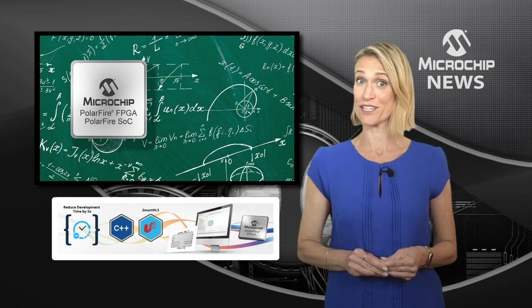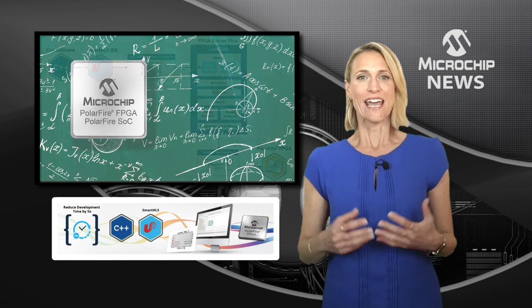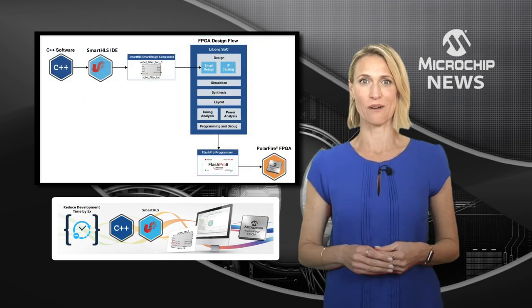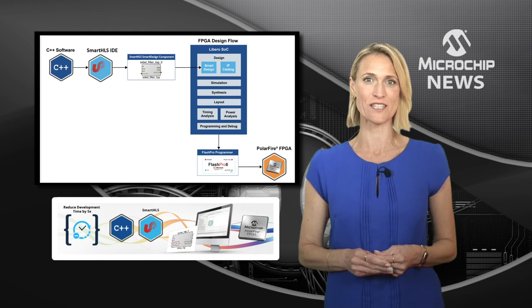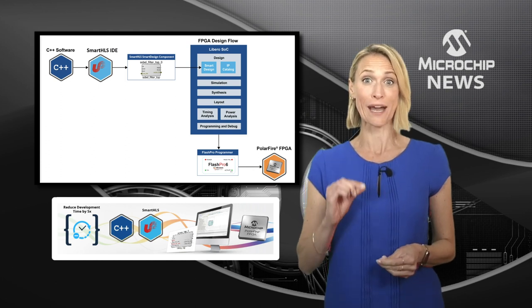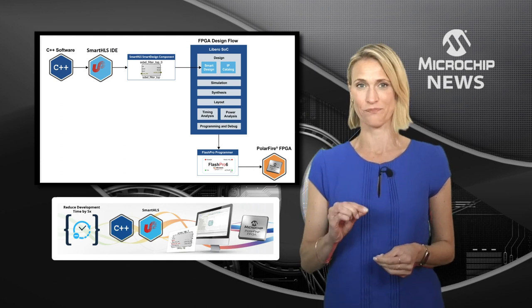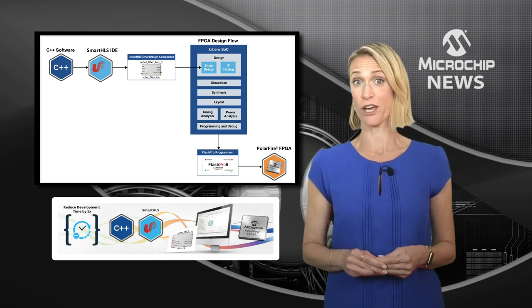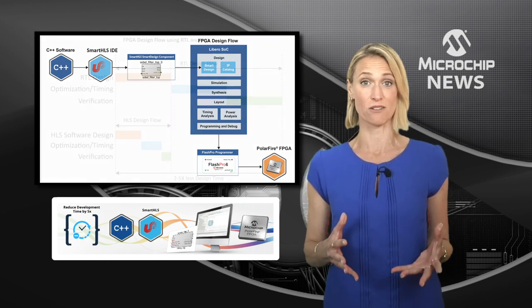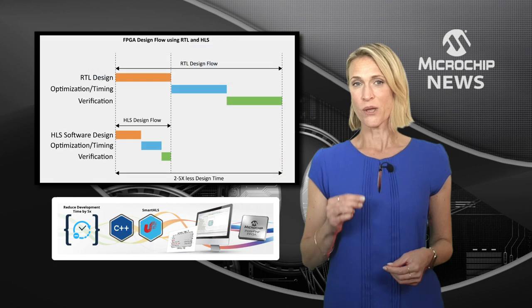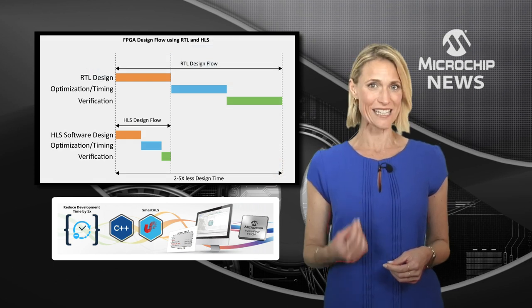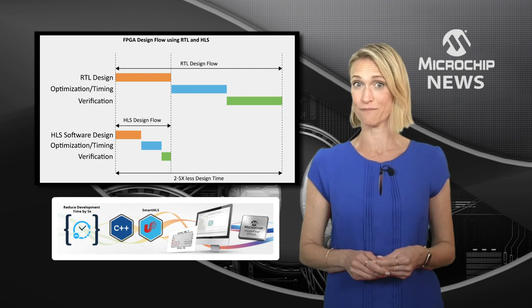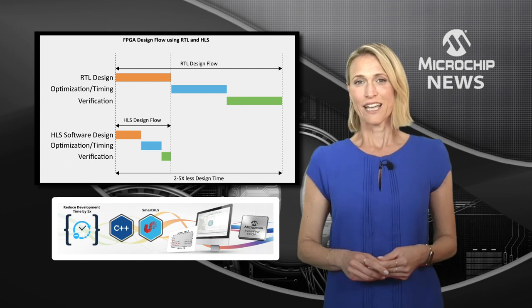There's no need for you to be an FPGA design expert. Enhance productivity and speed your time to market while taking advantage of FPGA performance with the lowest power consumption. Smart HLS needs up to ten times fewer lines of code compared to an equivalent RTL design, with the generated code being easier to read, test, understand, debug, and verify.